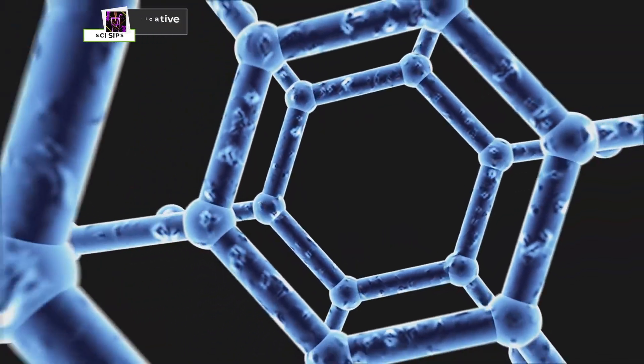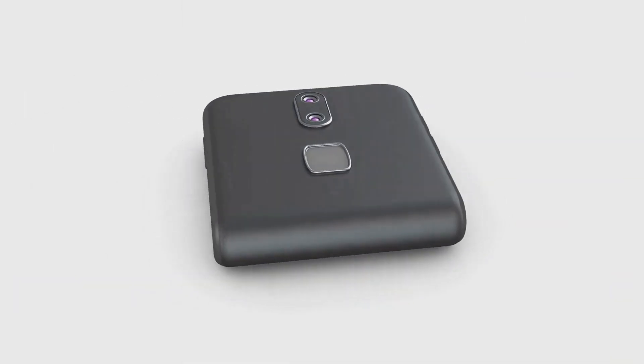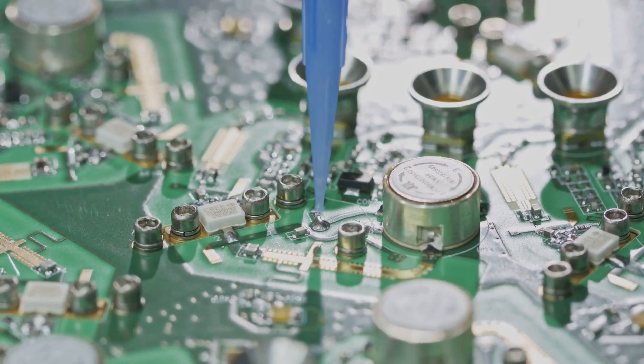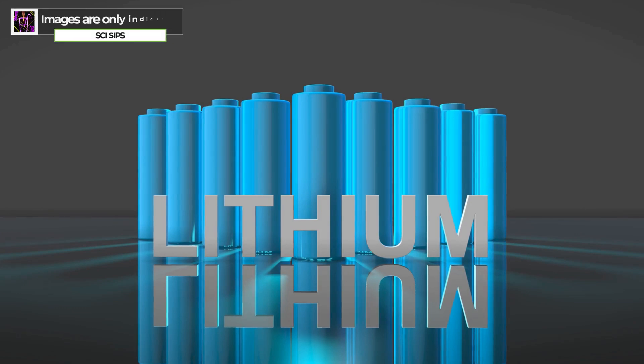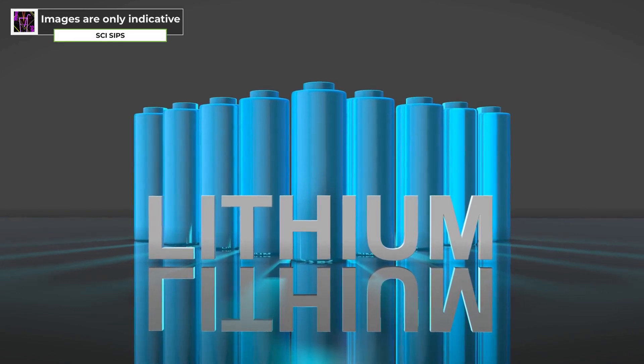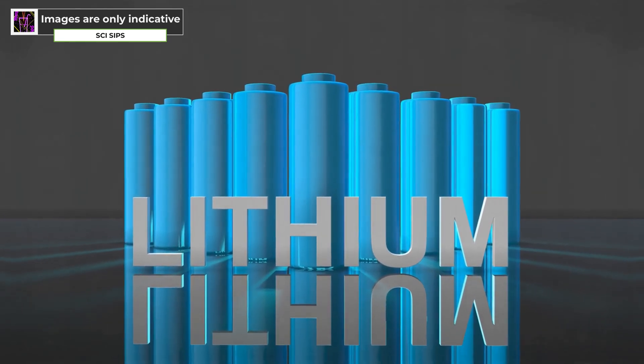Borophene, with its puckered structure and anisotropic conductivity, offers a compelling alternative. Its flexibility makes it easier to integrate into devices, while its unique electronic properties open up new possibilities for device design. Furthermore, borophene exhibits superior catalytic properties compared to graphene, making it a promising candidate for applications in energy production and storage.